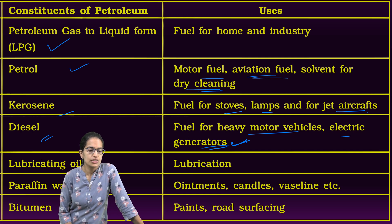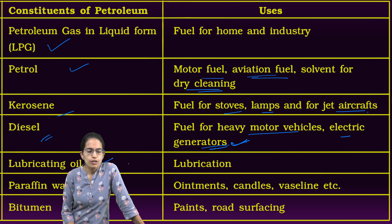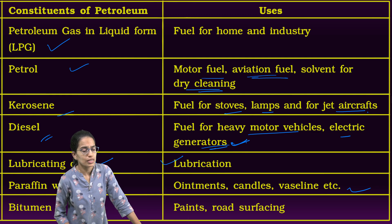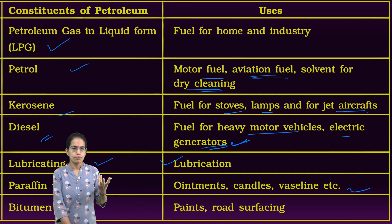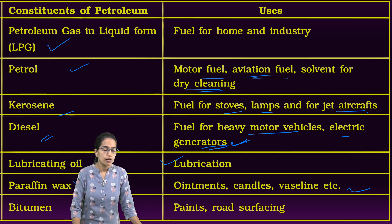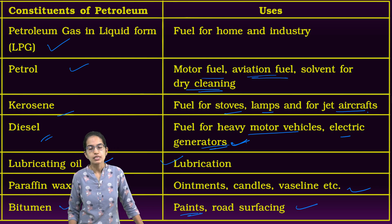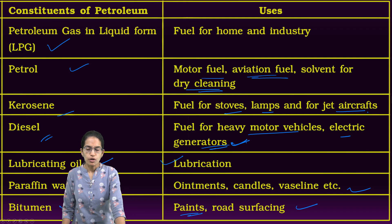Diesel vehicles are not popular across the globe. India does have diesel vehicles. Lubricating oil for the purpose of lubrication of various machines. Paraffin wax for candles, Vaseline, ointments, and the perfume industry where perfume candles are made. Bitumen, as I said, for road surfacing and creating paints. These are some of the uses for bitumen.